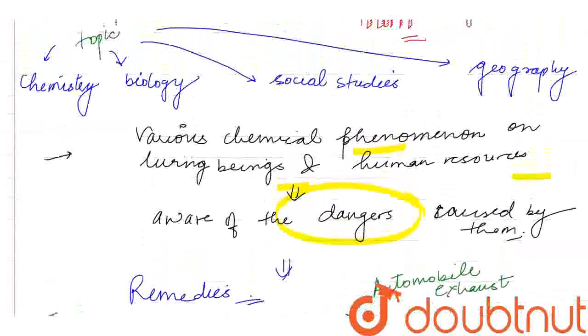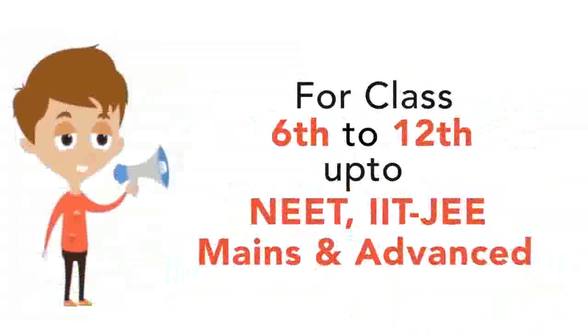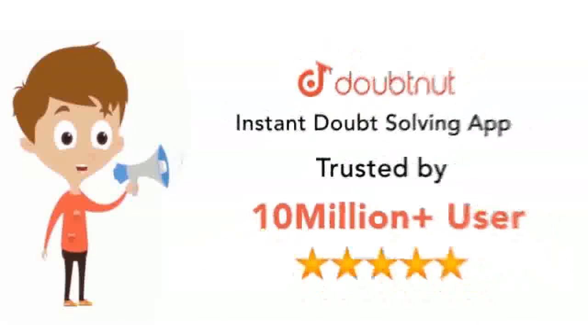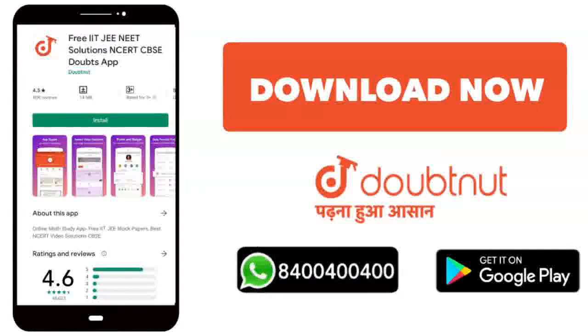Thank you. Class 10 to 12 and IIT means advanced level. 10 million students today. Download Doubtnet or WhatsApp 8444444444.